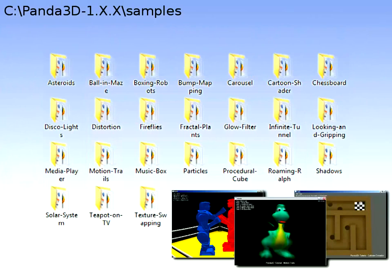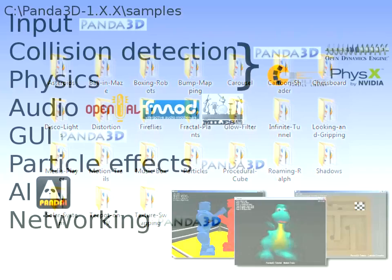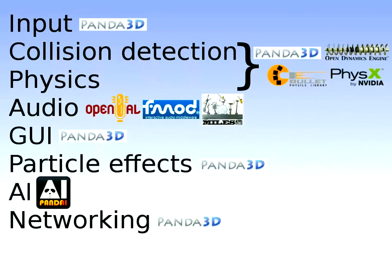Panda 3D is a game engine, not only a 3D engine. It has code for handling input, collision detection, physics, audio, GUI, particle effects, artificial intelligence, networking, and wrappers around other libraries like Bullet, ODE, PhysX physics engines, OpenAL, FMOD, and Miles audio engines.